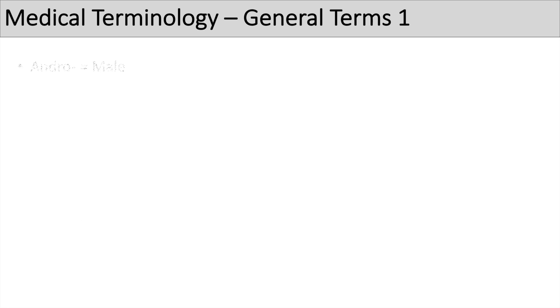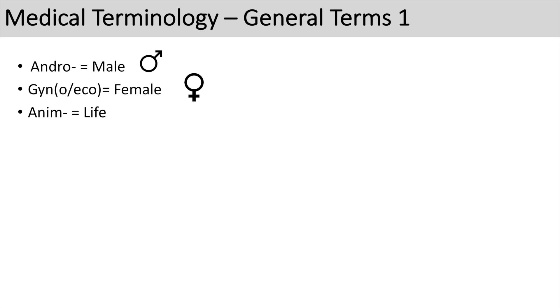Now we're going to move on to some more general terms. The first one is 'andro', which means male — you can think of androgens. The next prefix is 'gyne', 'gyno', or 'gyneco', which means female — think of gynecology. The next prefix is 'anim', which means life — think of the words animal or animated.